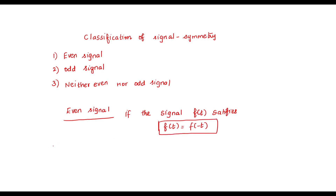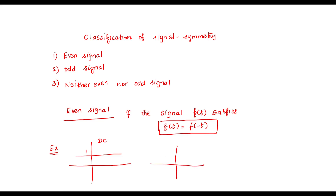Now, I am going to give some examples for even signal. The first signal is the DC signal — that is an even signal. And next, this is also an even signal. Next, the cosine waveform — that is also an even signal.